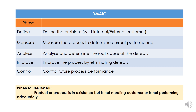When do we use DMAIC? We use it when there is already an existing activity — an existing process or product that is already running. If that product or process is not meeting customer satisfaction, not meeting internal satisfaction, and the process is not achieving its KPI or performance targets, that is when we apply the DMAIC approach.